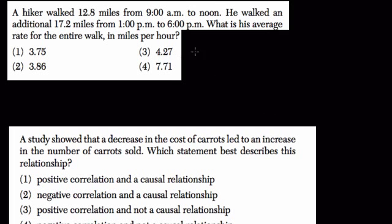Okay, so we have a problem with a hiker here walking a total distance of 12.8 miles from 9 a.m. to noon and then 17.2 miles from 1 to 6. So we're trying to find the average rate for the entire walk.